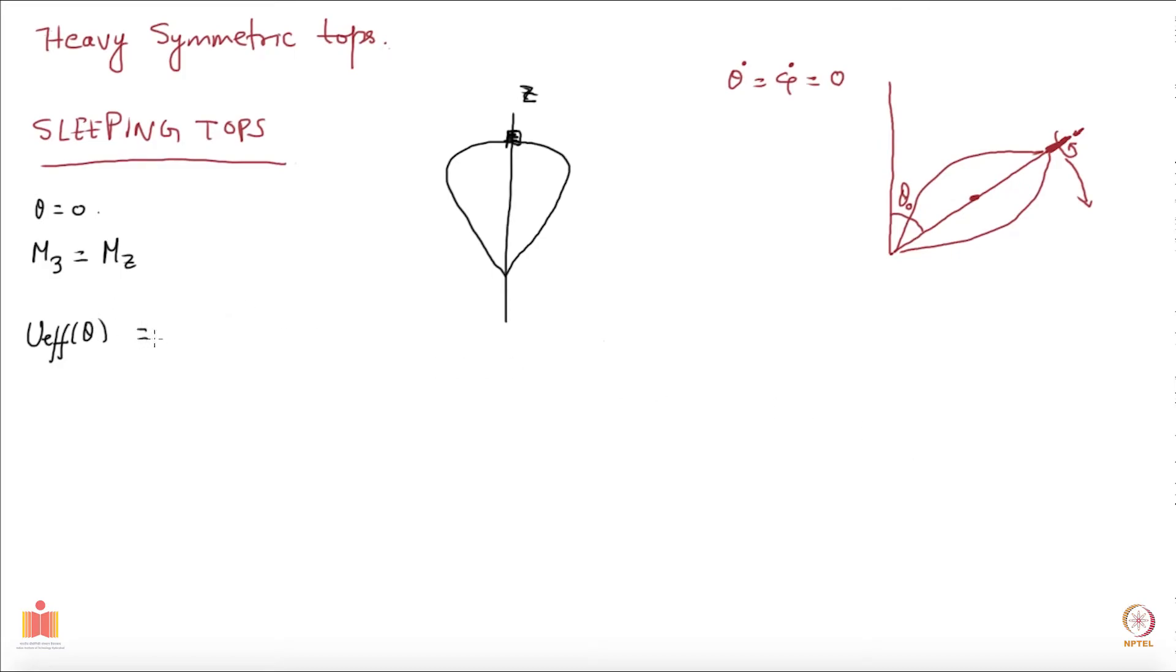Our u effective of theta is (mz - m3 cos theta) squared divided by 2i1 prime sin square theta and then you have the gravitational term mu gl cos theta.